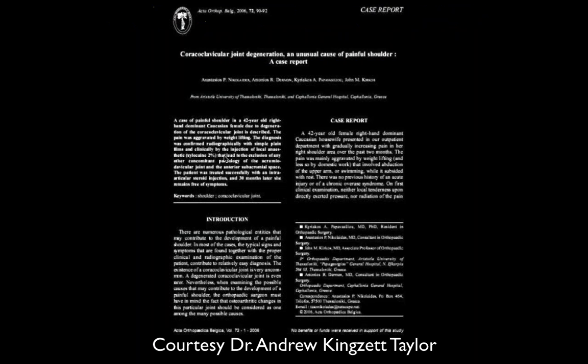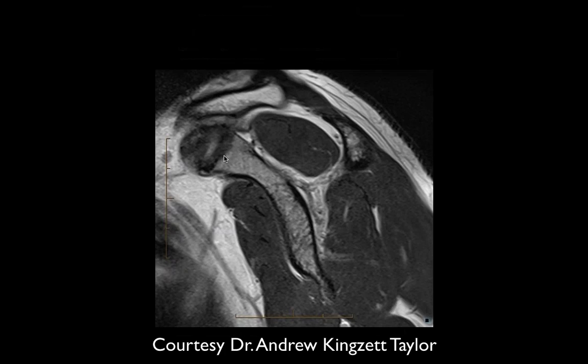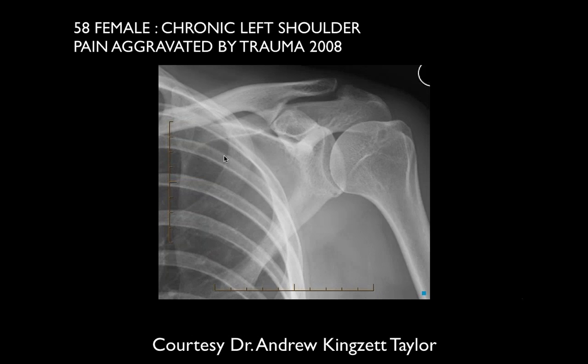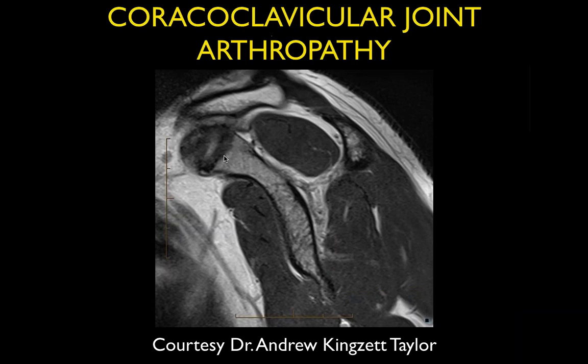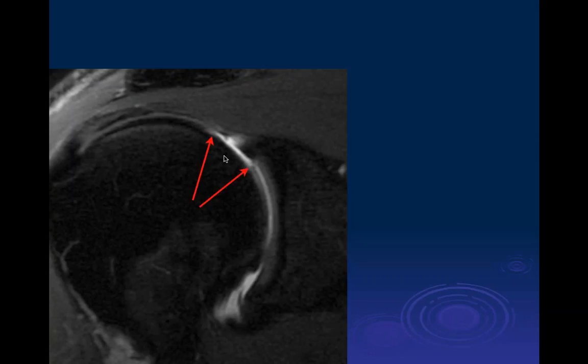By 2010 with worsening chronic shoulder pain, this shows hypertrophic inflammation with a pseudo-arthrosis and significant degenerative disease at the pseudo-arthrosis. Whether this is post-traumatic or congenital is debated — without pre-accident imaging it's impossible to confirm.